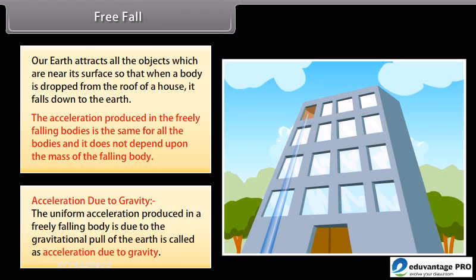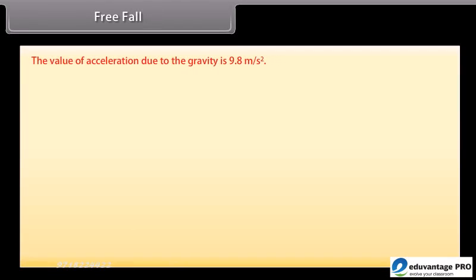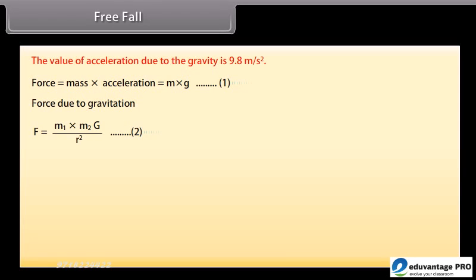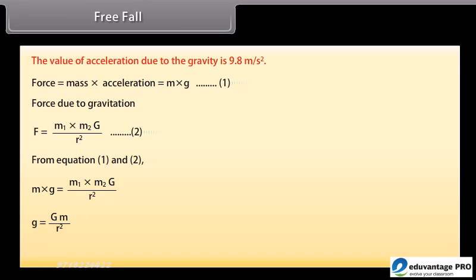Acceleration Due to Gravity: The uniform acceleration produced in a freely falling body due to the gravitational pull of the earth is called acceleration due to gravity. Its value is 9.8 m/s². From F = ma (equation 1) and F = G·M1·M2/R² (equation 2), we derive g = G·M/R², which gives g = 9.8 m/s².